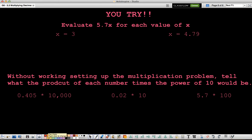So what you're going to do tonight is you're going to solve these two problems. You're going to evaluate 5.7x for each value of x. So remember, 5x means 5 times x, and then you replace this x with the values given. So in this case, the value given is 3. And then this is a different problem, so you do it again over here, and you replace it with 4.79.